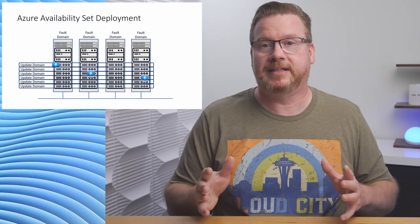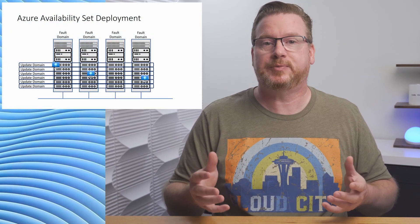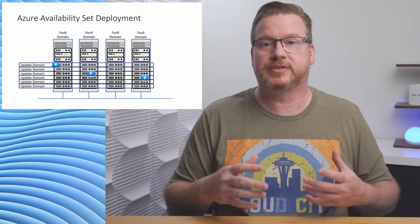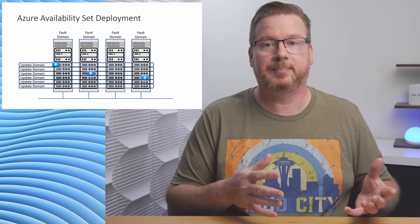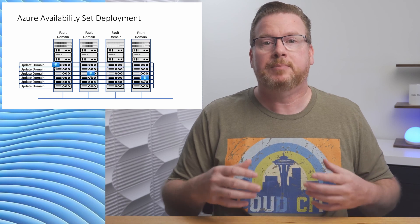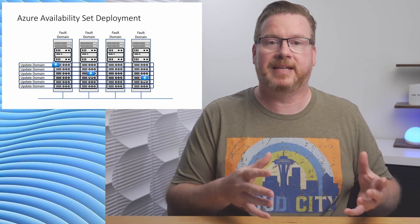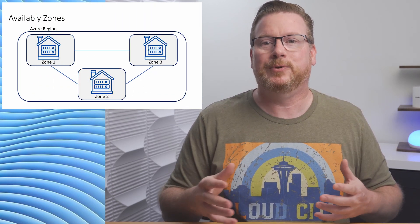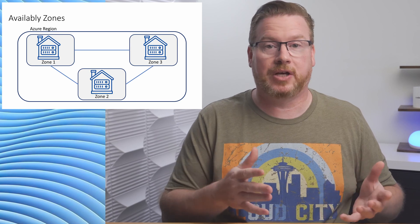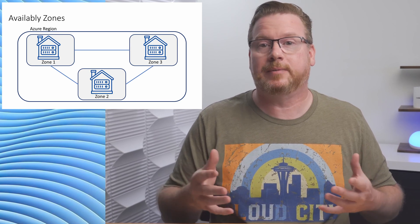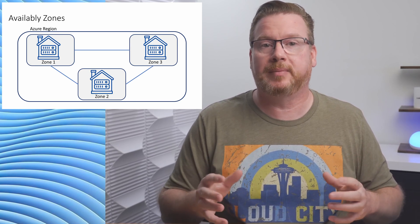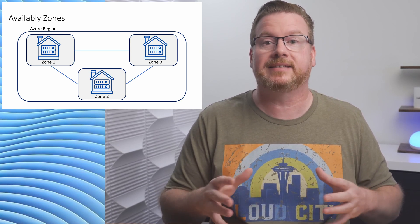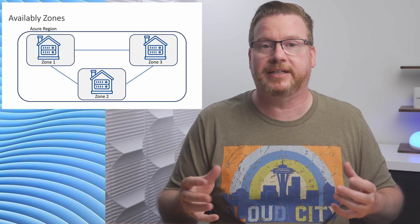Let's get a quick recap of our availability options. We have availability sets — these spread the resources across fault and update domains, but all resources go to the same data center in a region.